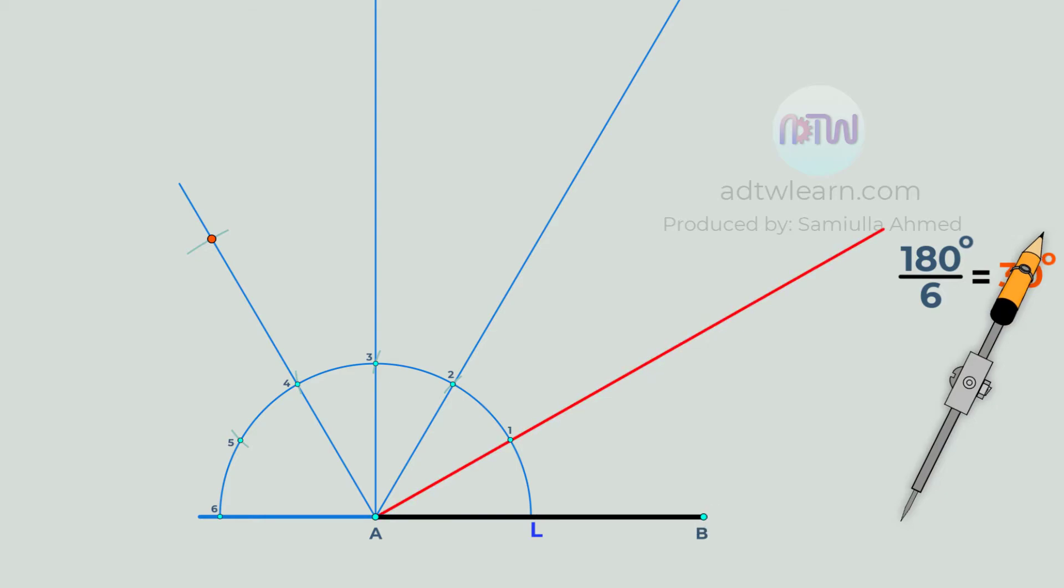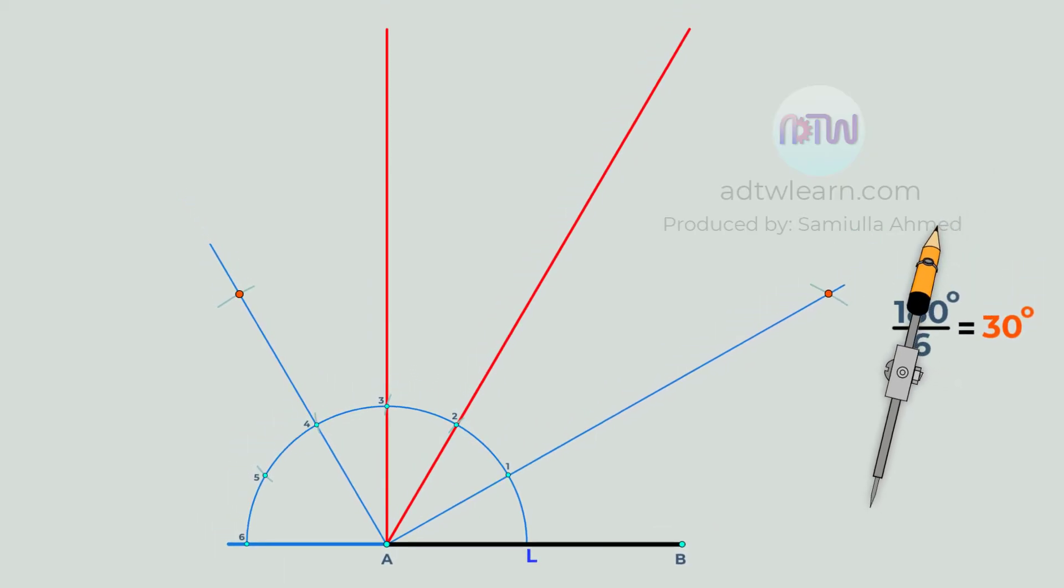Next, place the compass at these points and cut arcs on the line passing through points two and three. These are the six vertices of our hexagon. Join these vertices with lines.